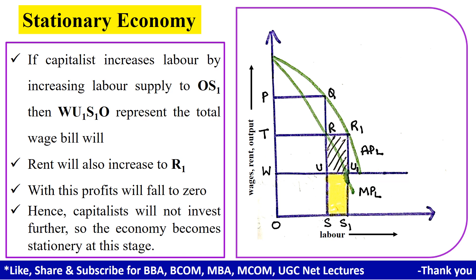As a result, the profits will fall to zero, and hence the capitalists will not invest further. At this stage, when the economy becomes stationary, there will be no new investment. I hope this theory is now clear to you. Kindly share and subscribe to my channel for brief and precise lecture sessions related to economics. Thank you.